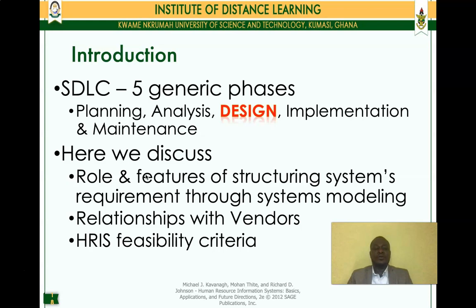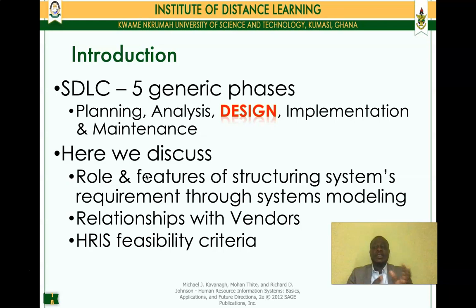That structuring is done through what we call systems modeling. The lesson will also touch on the relationship with vendors — vendors are people who are ready to give us what we need. Once the system is designed, the next stage is to look for somebody with the capacity to provide us with the system. That is usually done by sending your needs out to the market, calling for people who can bid and provide the service. We will also consider the feasibility criteria based on which a decision is made either to acquire certain HR information systems or not.